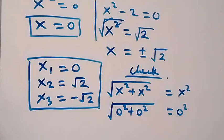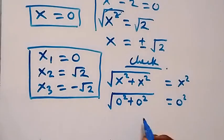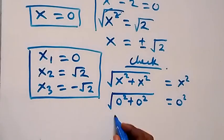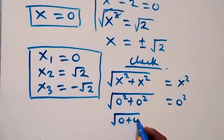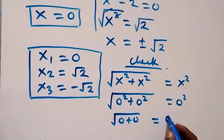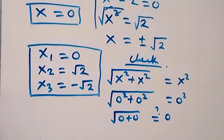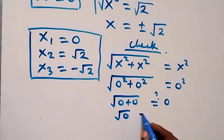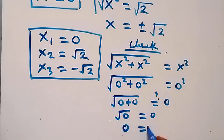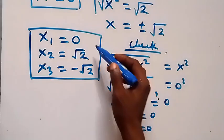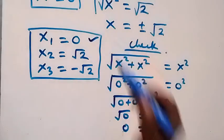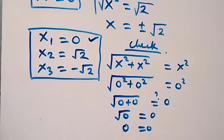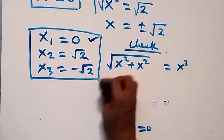Substituting x = 0: we get √(0² + 0²) = 0². This becomes √(0 + 0) = 0, so √0 = 0, which equals 0. The left hand side equals the right hand side, so x = 0 satisfies the given problem.